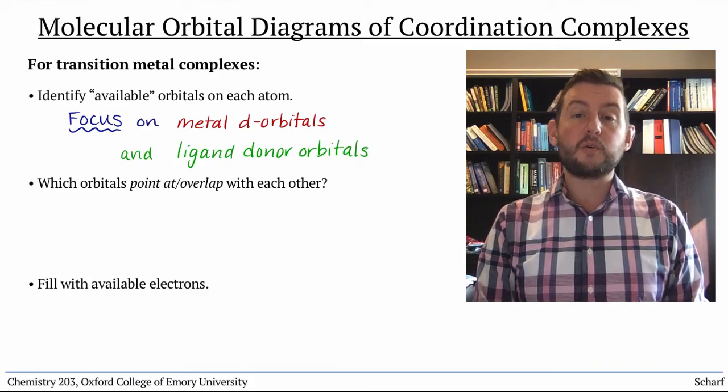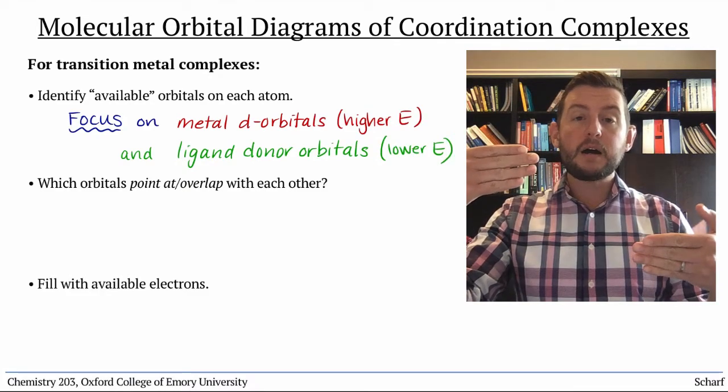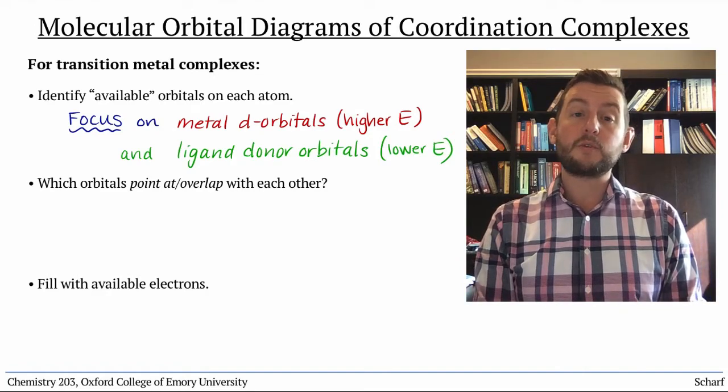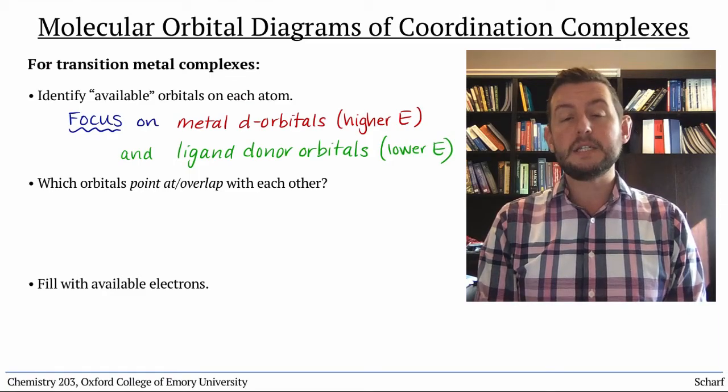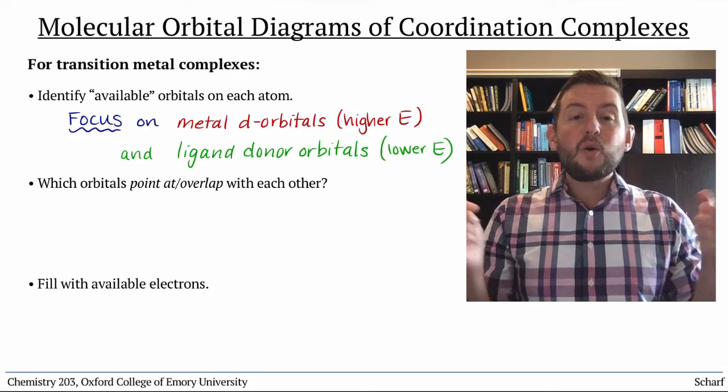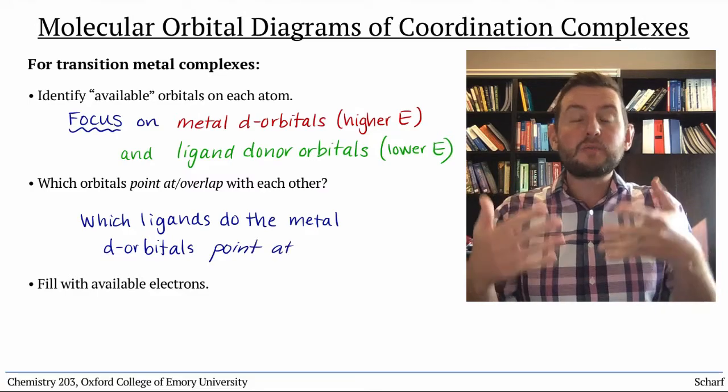In general, the ligand donor orbitals are lower in energy than the metal d orbitals. So when they make bonds, the bonding orbitals are closer in energy to the ligand-based orbitals, and the antibonding orbitals are closer to the metal's d orbitals. The key is identifying which d orbitals the ligands point at, and how directly.